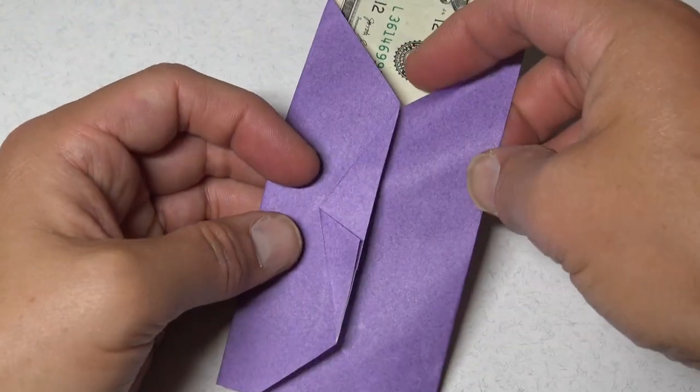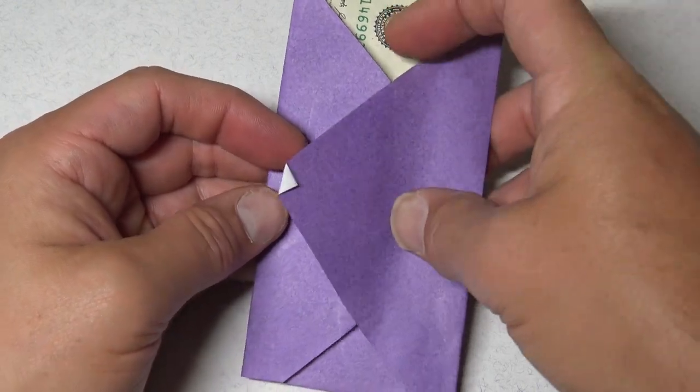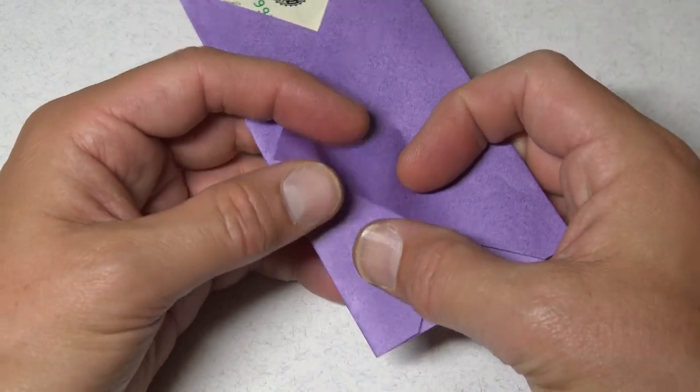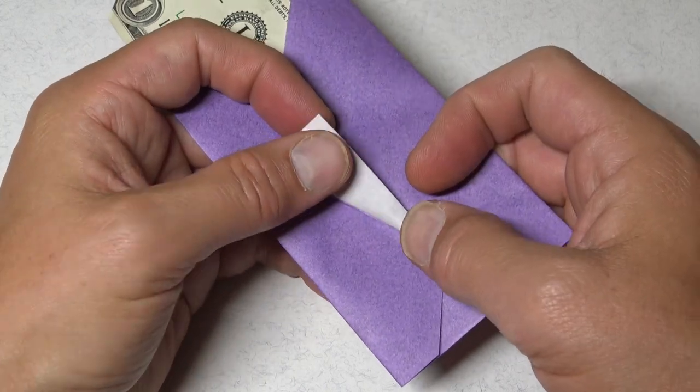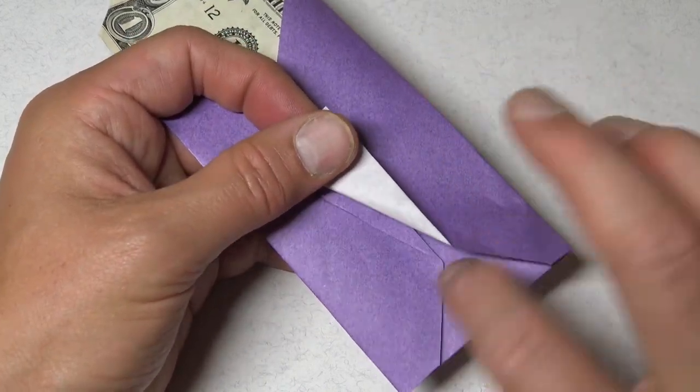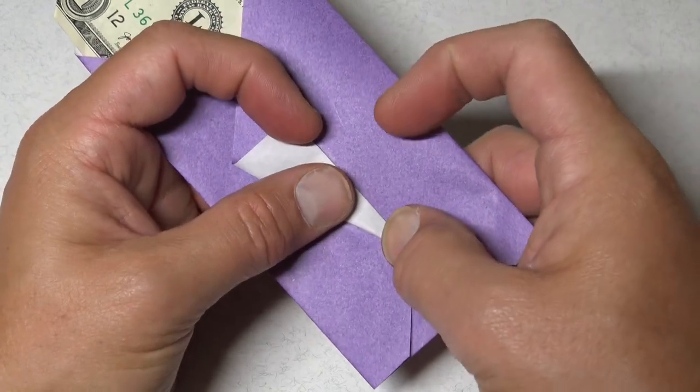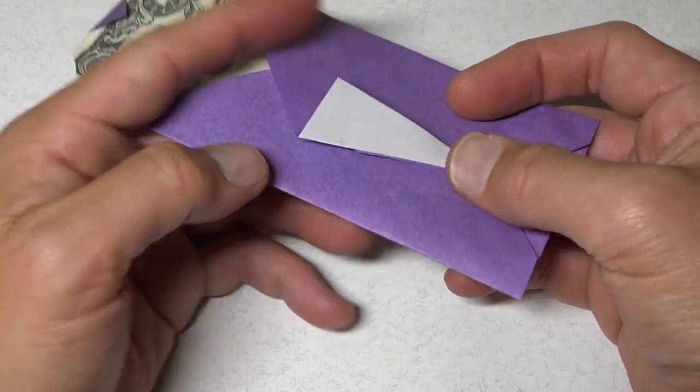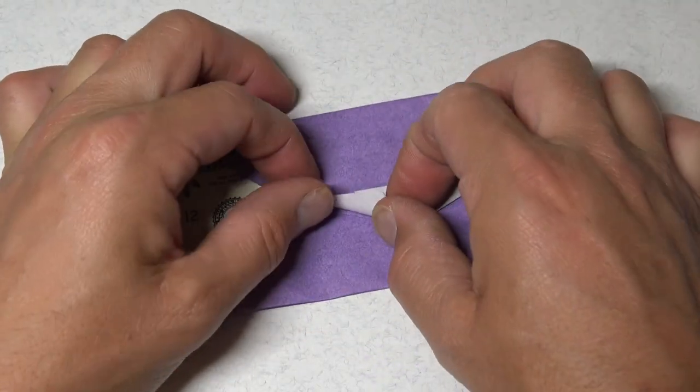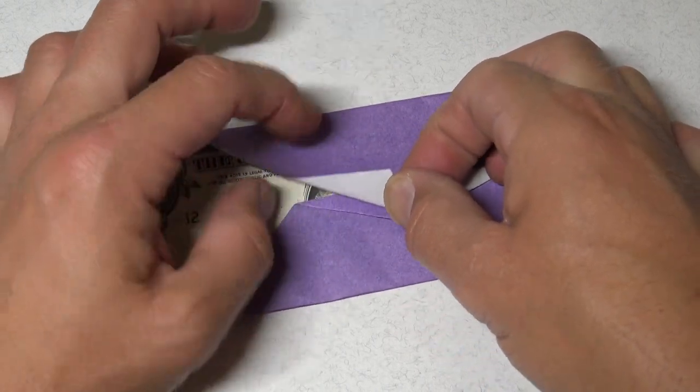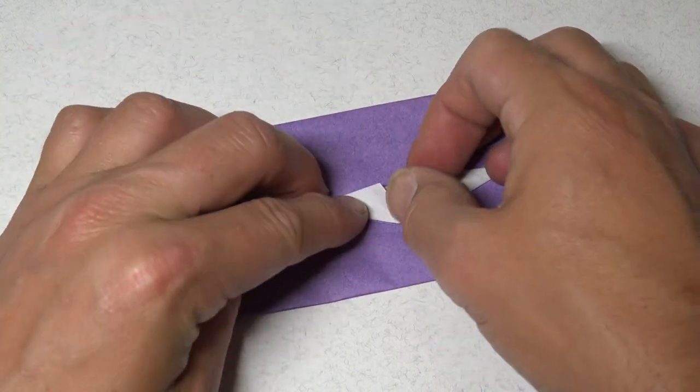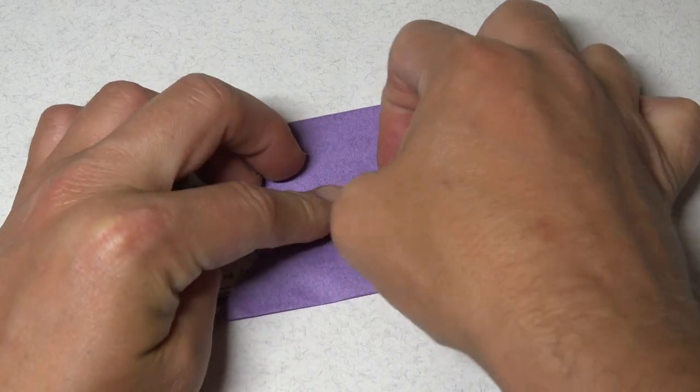And now bring this flap on top and fold this flap so that it aligns with this edge like this. And fold this flap so it aligns with this edge. Like that.